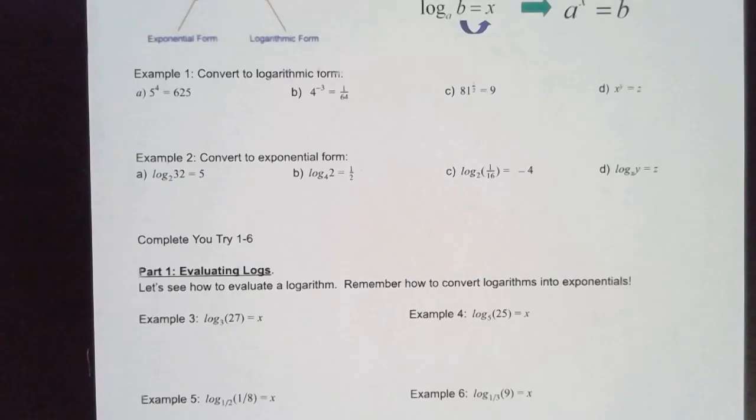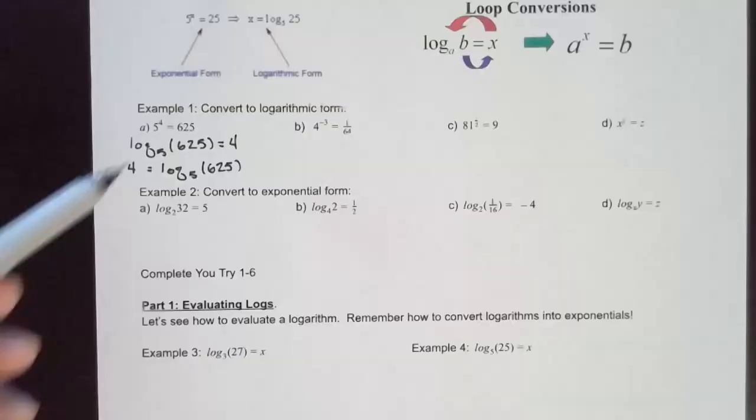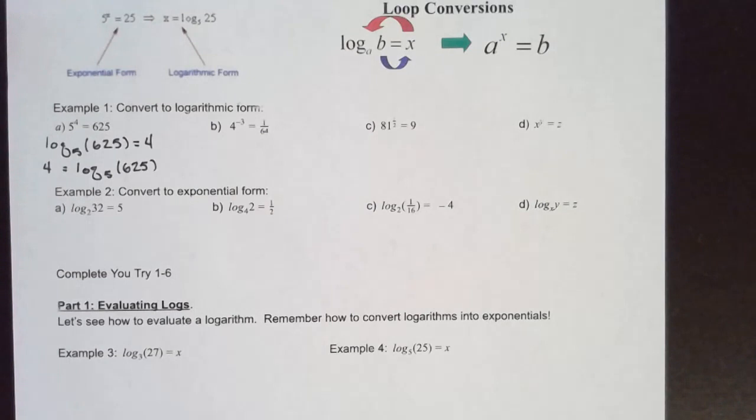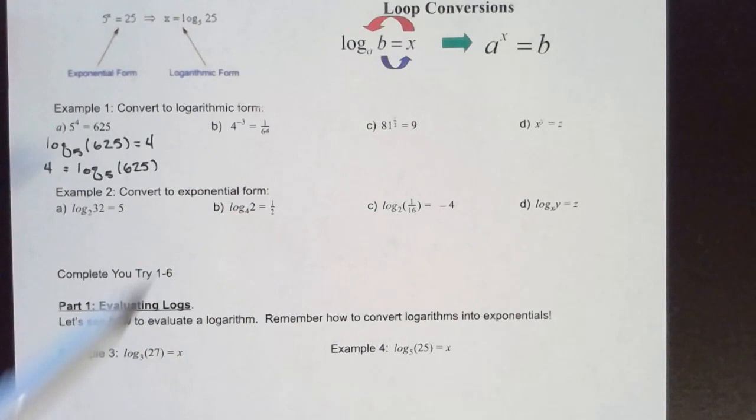That's log base 5 of 625 equals 4, or the other way around: 4 equals log base 5 of 625. Let's look at part b — this one has a negative exponent, so this negative 3 is going to be on one side of the equation. There's going to be a log base 4 of 1/64.